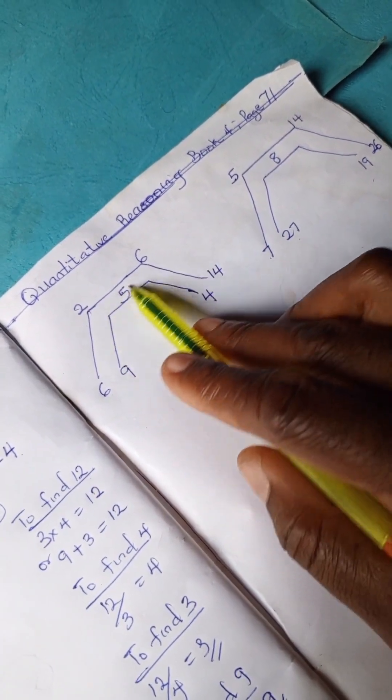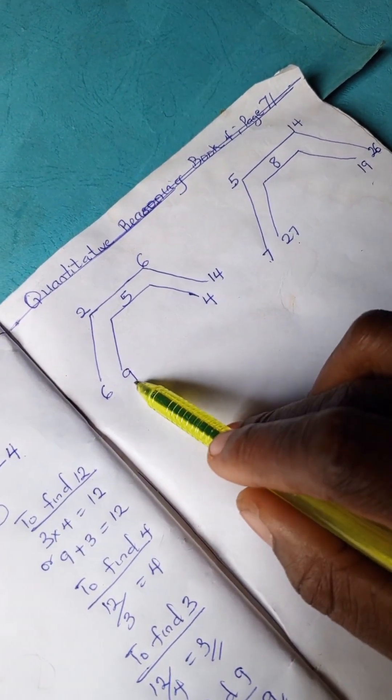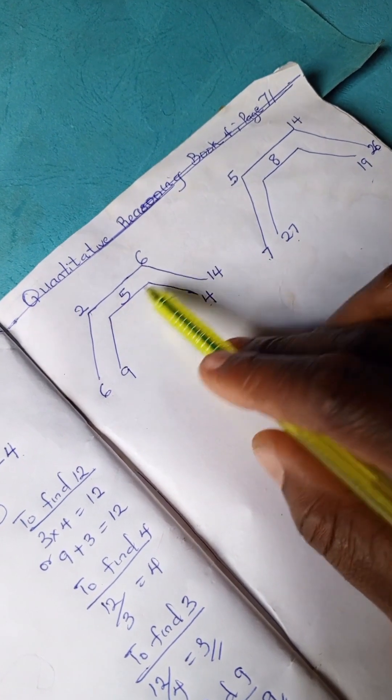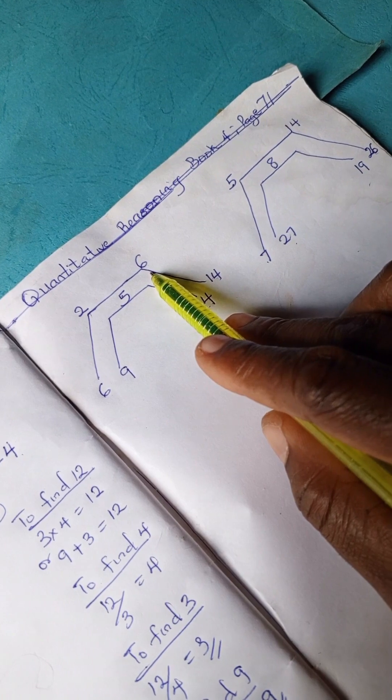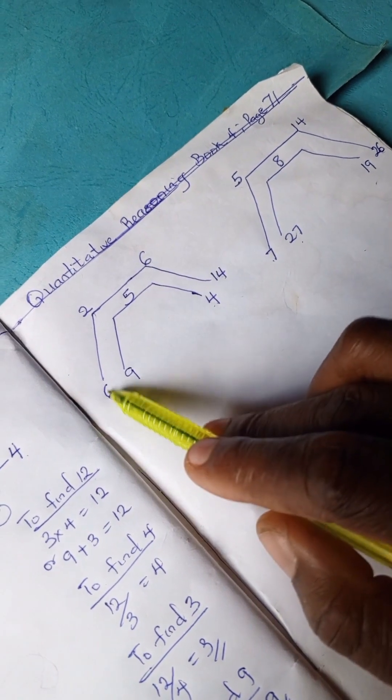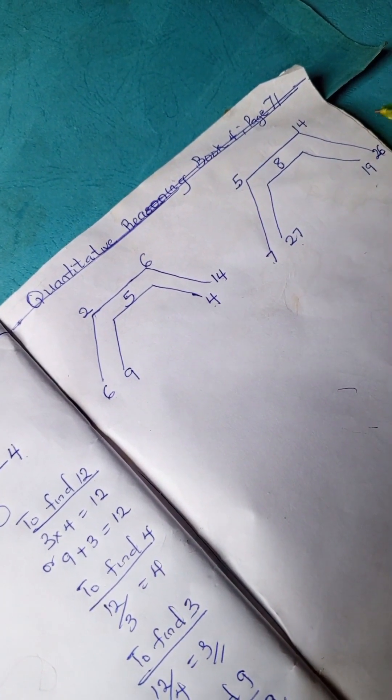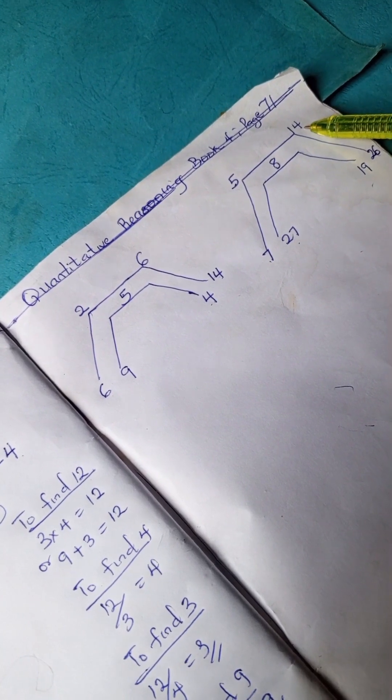So we have this problem and we need to unravel it. 9 minus 4 is 5, that's good. 14 minus 6 is 8. 6 plus 2 is 8. So let's see if we can do the same thing. 26 minus 14 is 12. 7 plus 5 is 12.